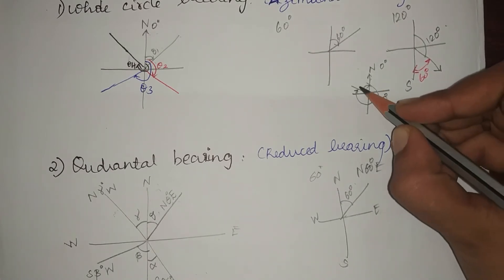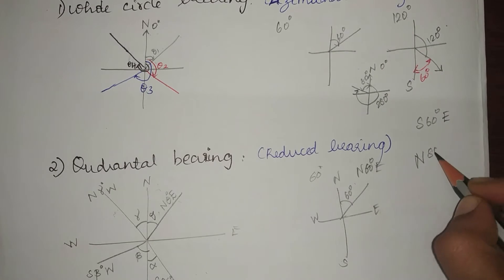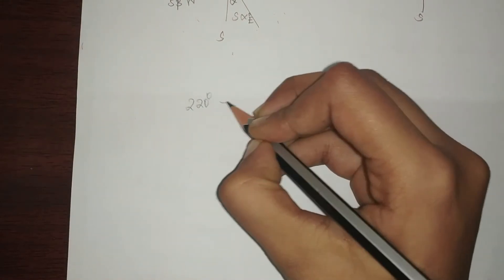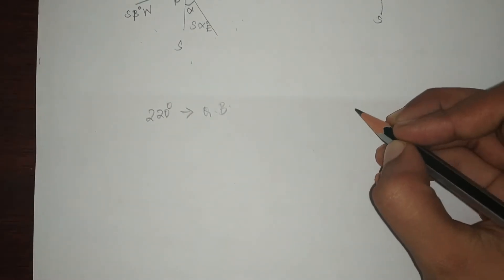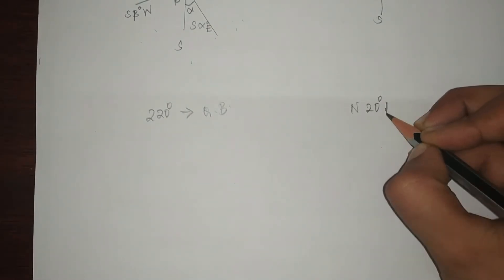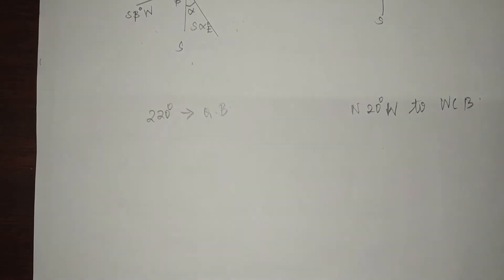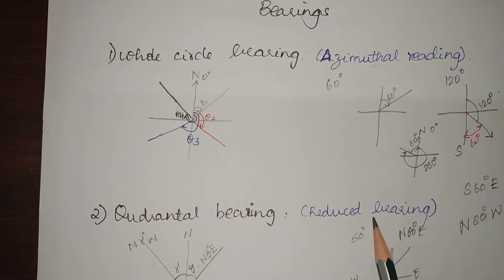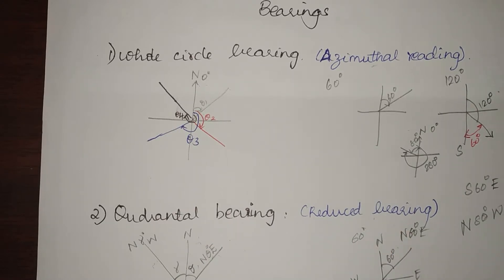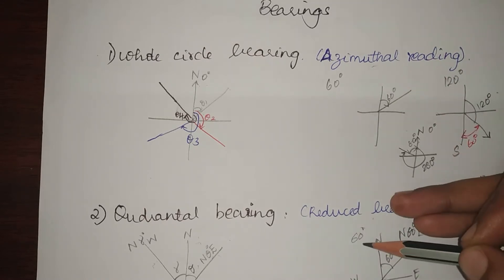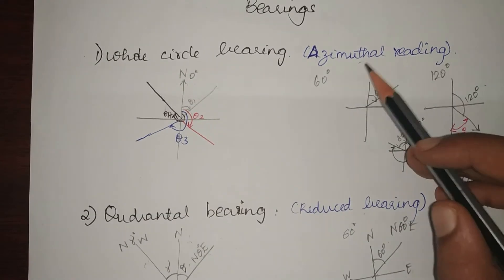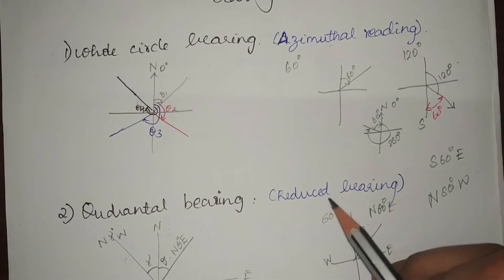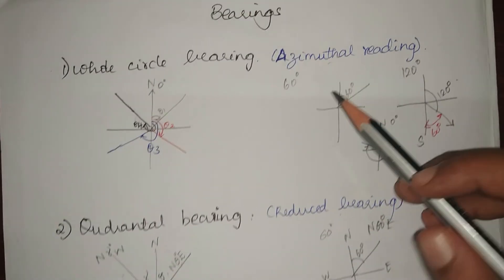Giving a quick problem: convert 220 degrees to quadrantal bearing, and convert North 20 degrees West to whole circle bearing. Keep in mind that whole circle bearing is also called azimuthal reading, and quadrantal bearing is also called reduced bearing. They might ask you to convert to azimuthal reading or reduced bearing, so do not confuse these two.